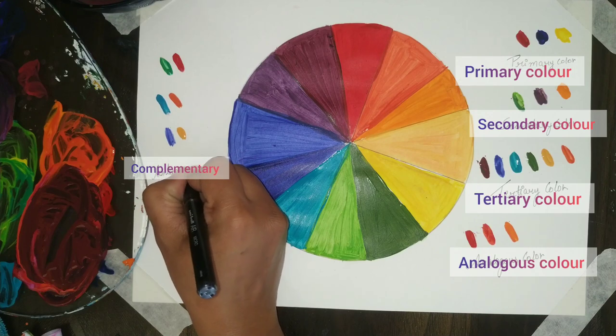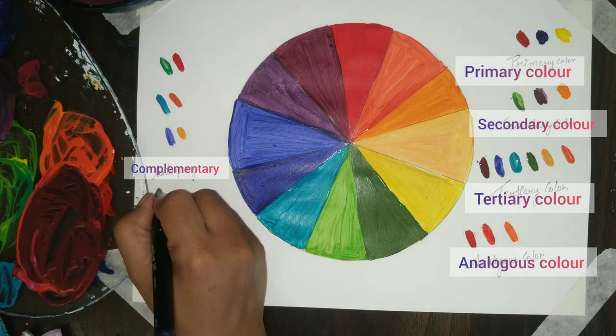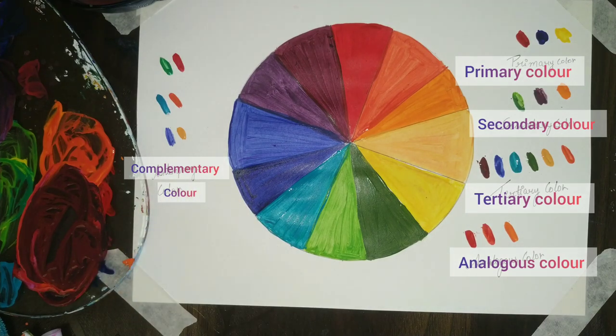Now we will learn what are warm colors. Anyone, any idea what are warm colors? Warm colors are red, orange, yellow, light orange, ochre, these are warm.